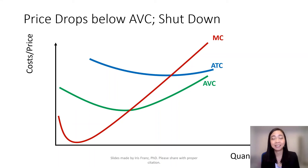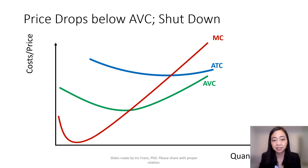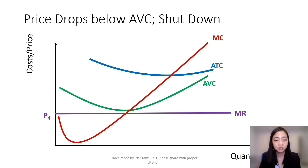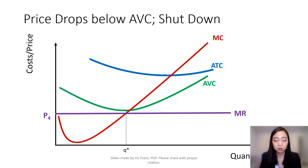Now I'm going to show you an example when the firm should shut down. Suppose our price continues to drop to P4. At this price, you equate marginal revenue and marginal cost, you find a quantity Q star. At this quantity, your average variable cost is higher than the price, which means your variable cost will be higher than your total revenue.